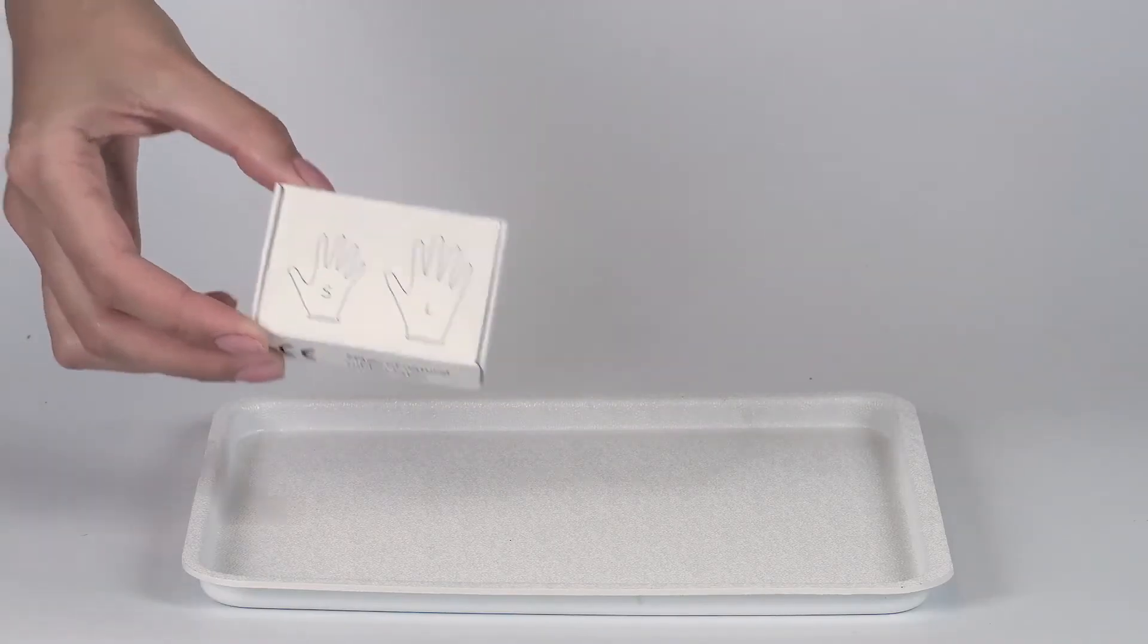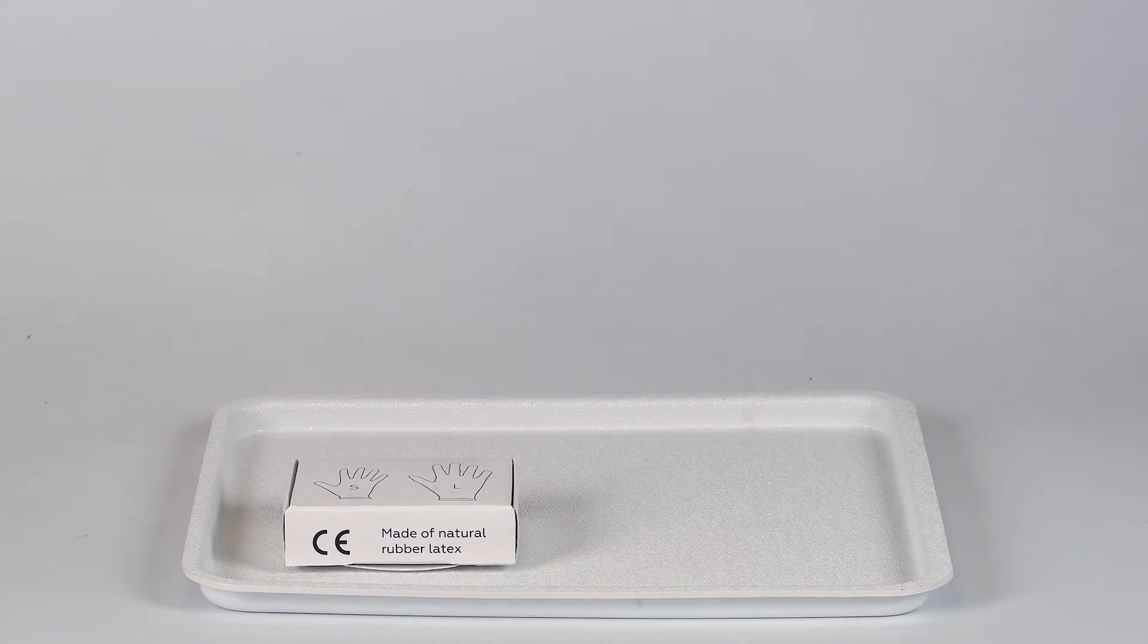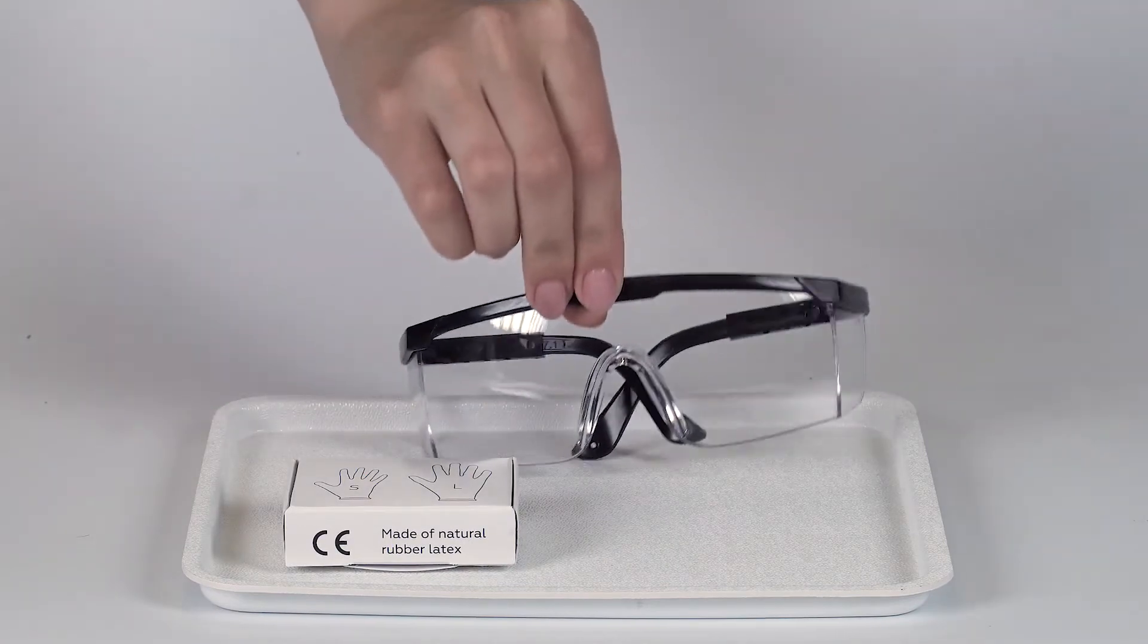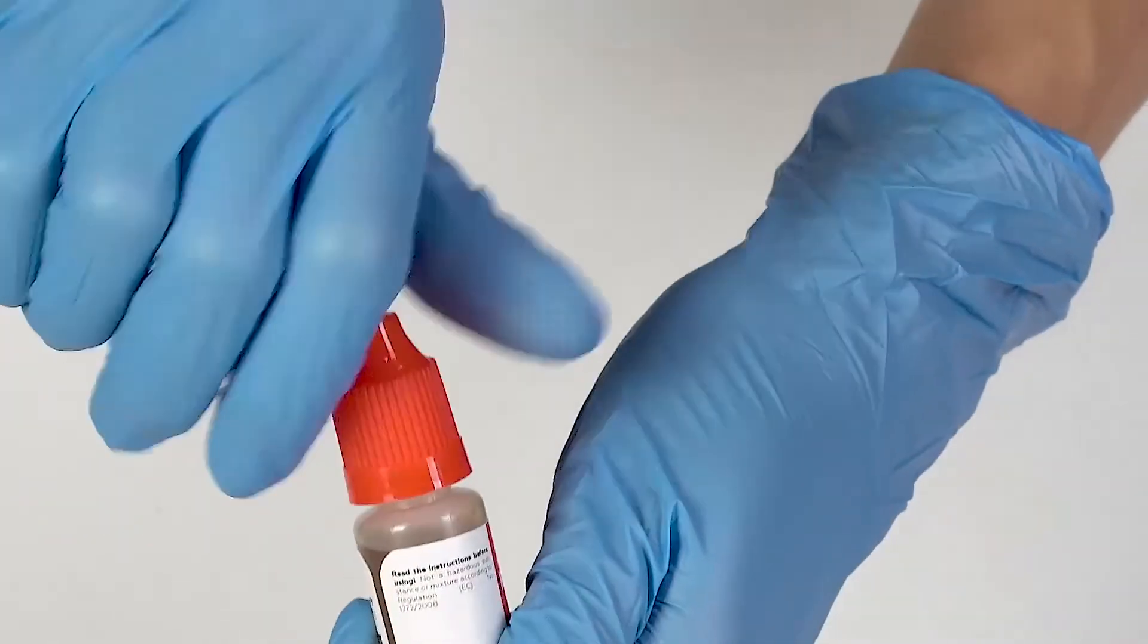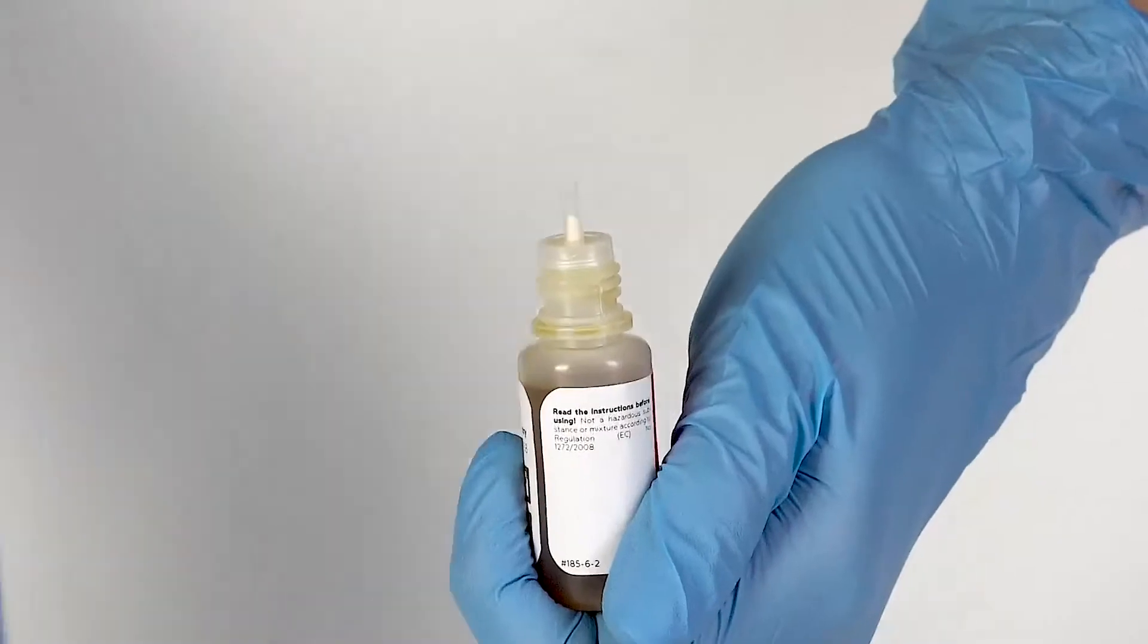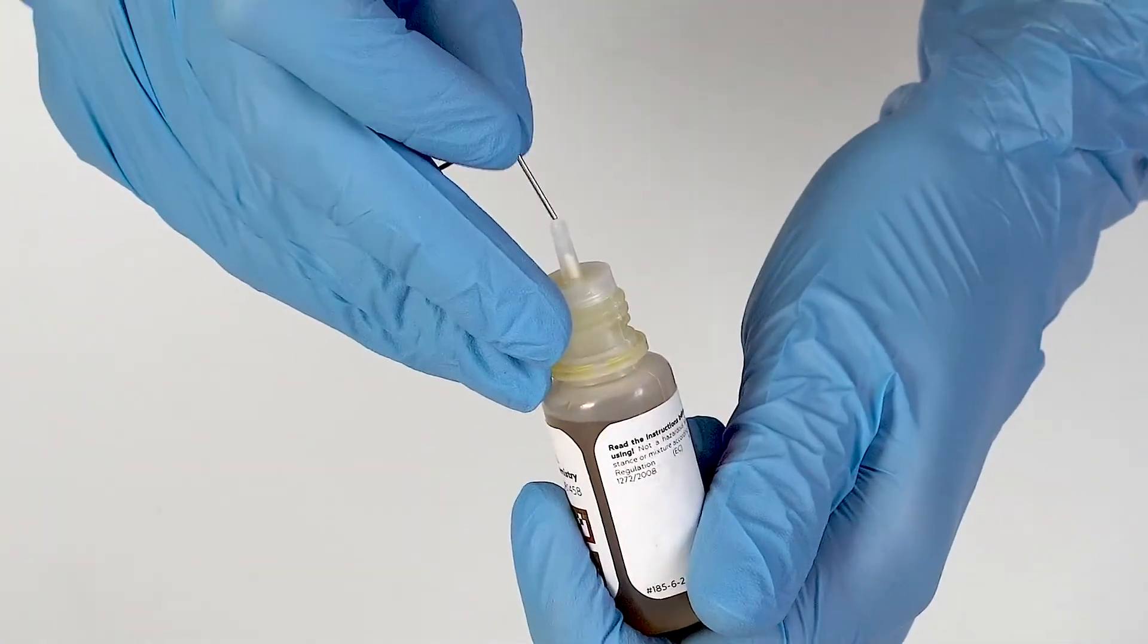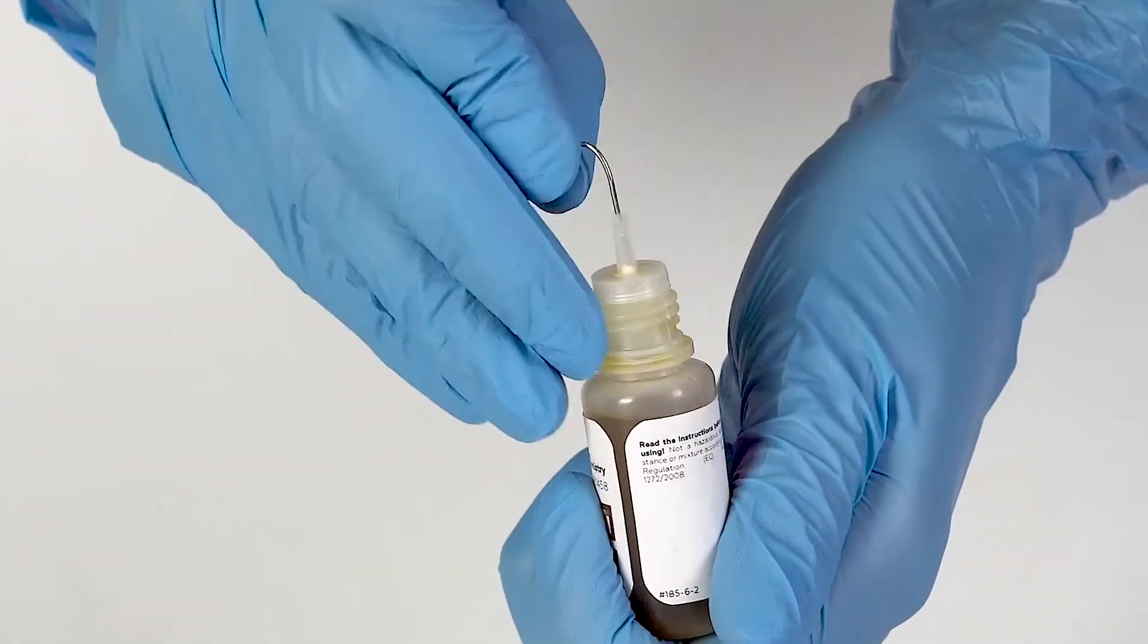Perform this experiment on a plastic tray to contain any possible spills. Don't forget to put on protective gloves and goggles before doing the experiment. To open a bottle containing a reagent, push the cap down and turn it. Pierce the bottle nozzle with an unbent paper clip.